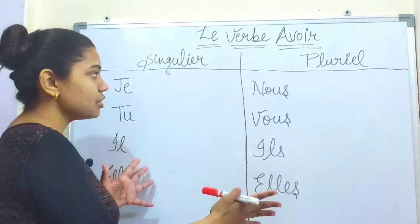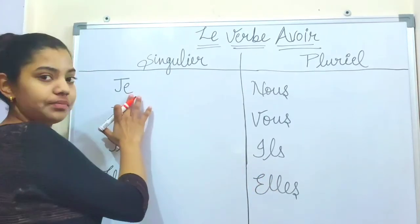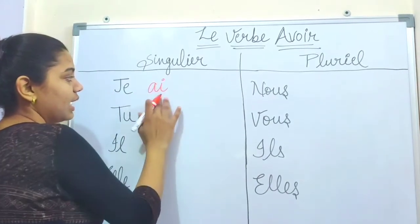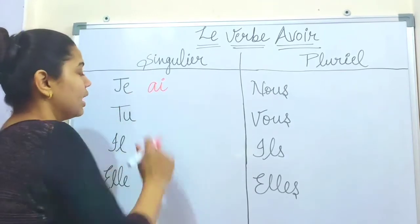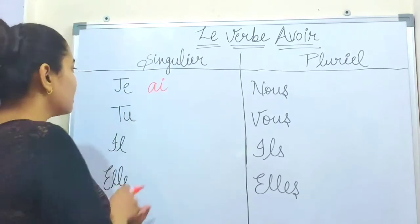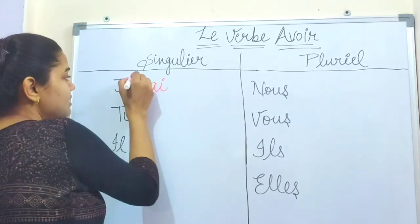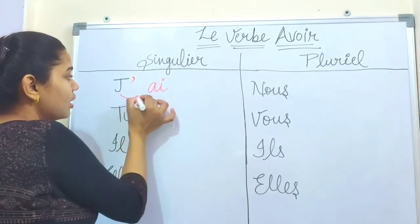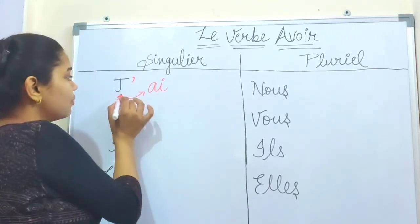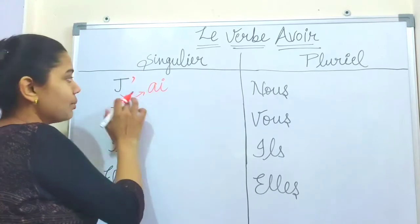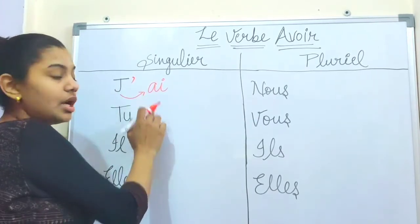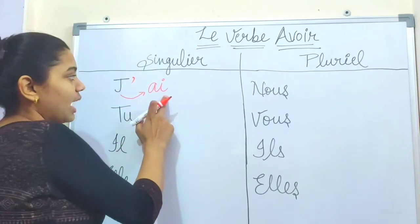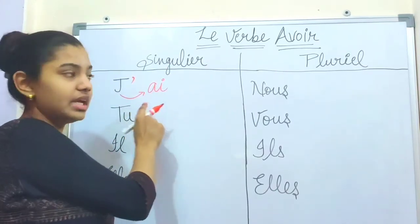Let's see the conjugation of the Avoir verb. First is je. The conjugation of Avoir with je is 'ai.' But because we have a vowel, we remove the 'e' from 'je' and add an apostrophe — so it becomes j'ai. We are merging the sounds of 'j' and 'a' because of the vowel.